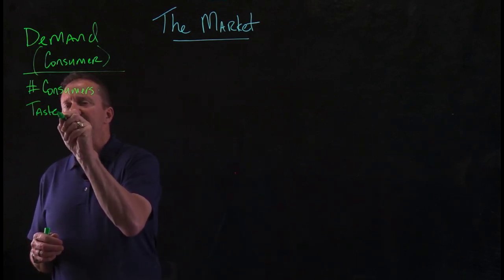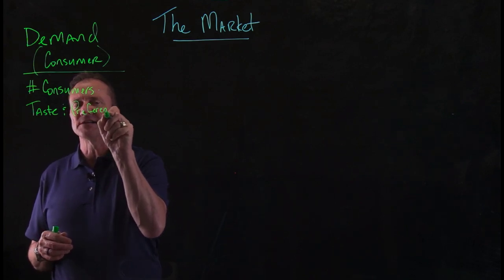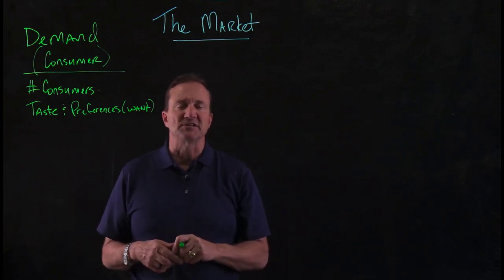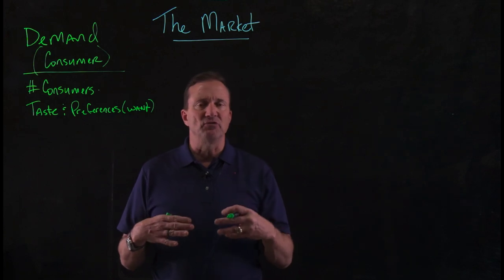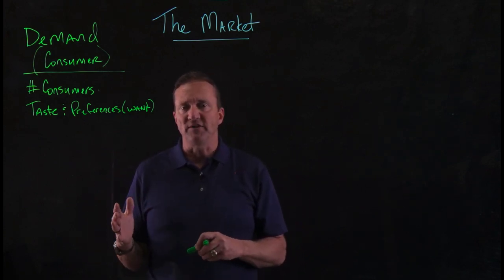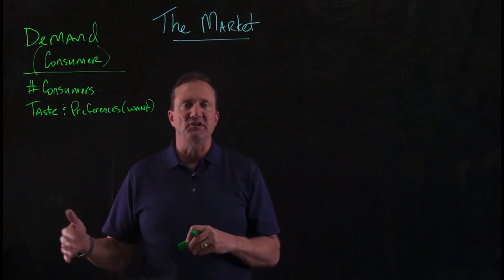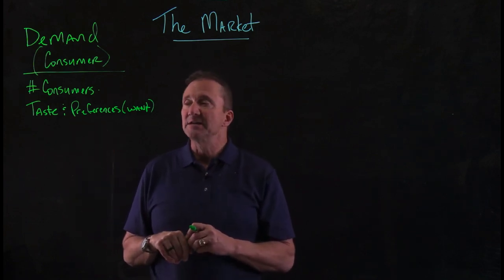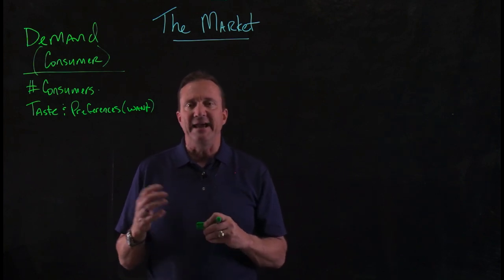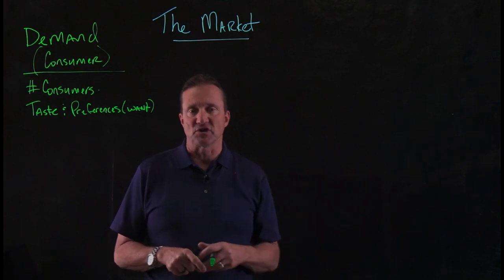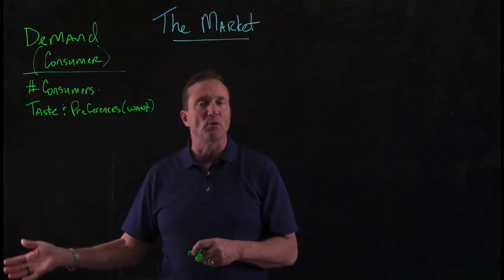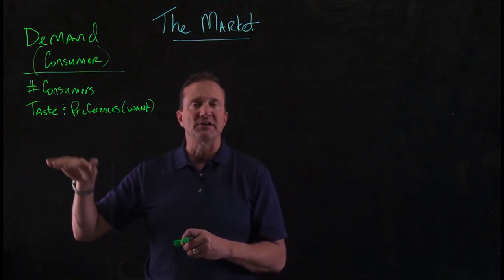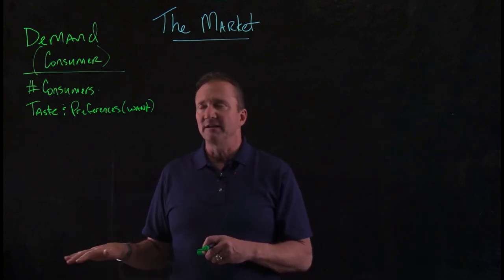What is demand made up of? The first factor is the number of consumers you have in the market. The more consumers that want to consume a product, demand goes up. If consumers go away from the market, demand goes down. Another factor is taste and preferences — how many people want it, based on wants, desires, and needs. When we educate consumers, more of them understand production practices and different types of products. So if taste and preferences go up — for example, eggs, milk, or beef is a good source of protein — demand went up. When taste and preferences go down, demand goes down.